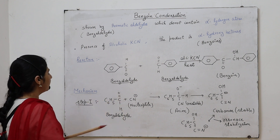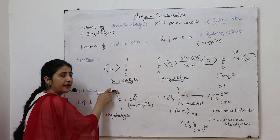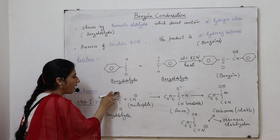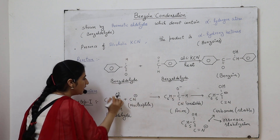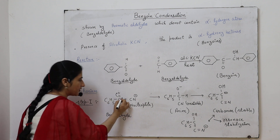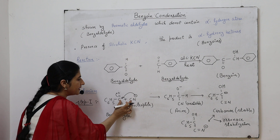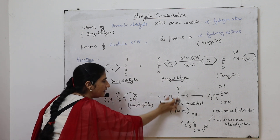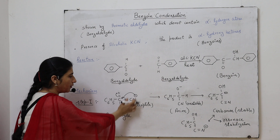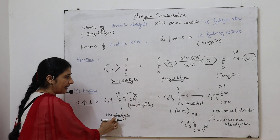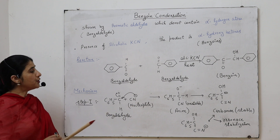As the nucleophile attacks the benzaldehyde, the pi electrons between the carbon and oxygen migrate toward the oxygen, because oxygen is more electronegative. It withdraws the pi electrons toward itself, resulting in formation of a negative charge on the oxygen due to migration. Due to this migration, the carbon acquires a positive charge, and the nucleophile attacks this positively charged carbon atom, resulting in formation of a carbon-CN sigma bond. We then get an anion.